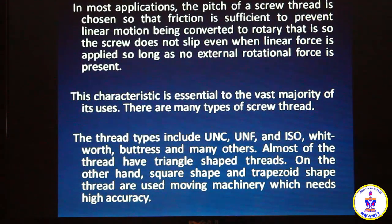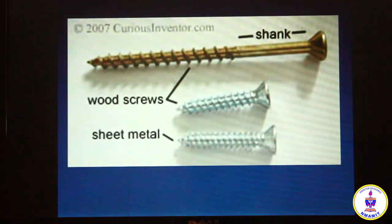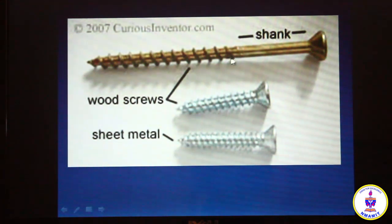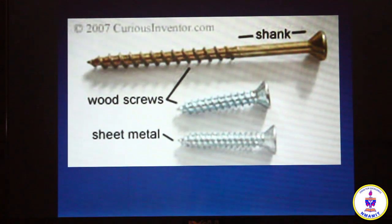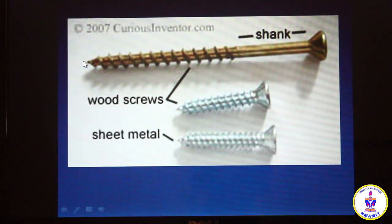A screw thread has many different applications. Here you can see a few wood screws, and generally the pitch is slightly more than the metric threads. Also, the helix is cut on the frustum of a cone, and this is the pointed end which is used to force the screw into the wood.